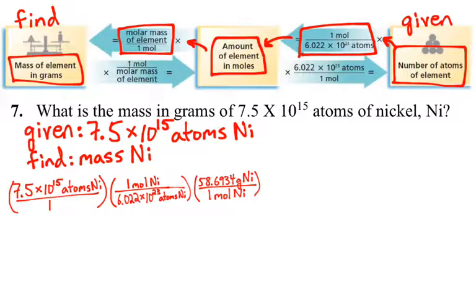We have 58.6934 grams of nickel for every one mole of nickel. And this, ultimately, should get us now to the mass of grams of this number of atoms of nickel that we started with. So, when we run through the math again, we can see how our units cancel out. In this case, our units are atoms of nickel and moles of nickel that end up canceling out. So, we have 7.5 times 10 to the 15 atoms of nickel times one mole of nickel over 6.022 times 10 to the 23rd atoms of nickel. That will give us moles of nickel with atoms having canceled out. And then we take our moles of nickel, multiply it times the molar mass of nickel, 58.6934 grams of nickel over one mole of nickel.